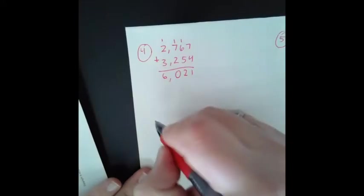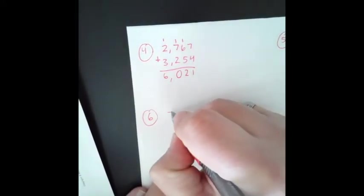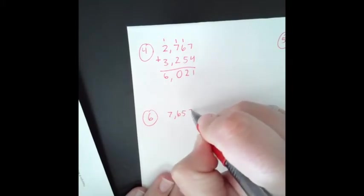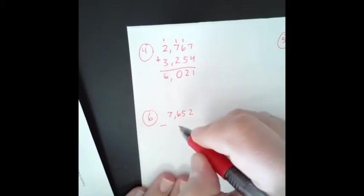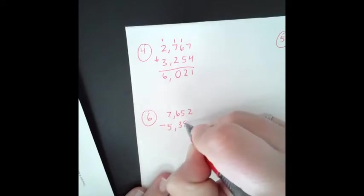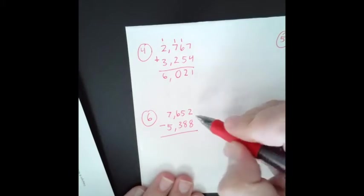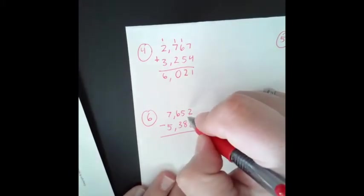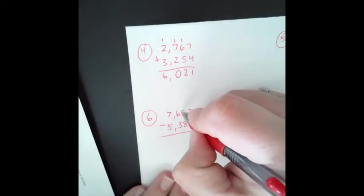And we have a subtraction problem for number 6. So again, I'm going to stack my numbers. 7,652 take away 5,388. So we start with our 1s place. 2 take away 8. We cannot do that. So we need to borrow, actually trade from the 10s place.